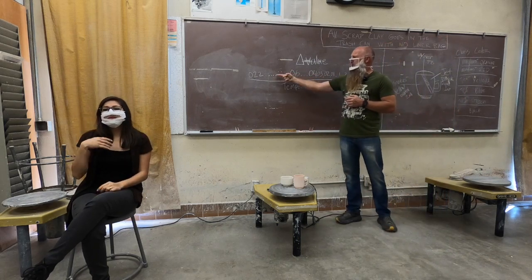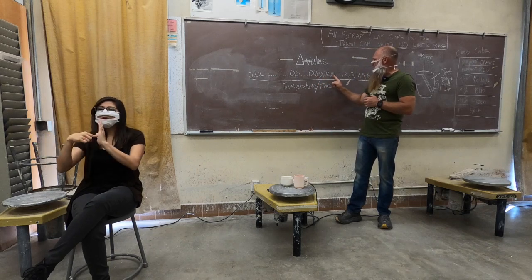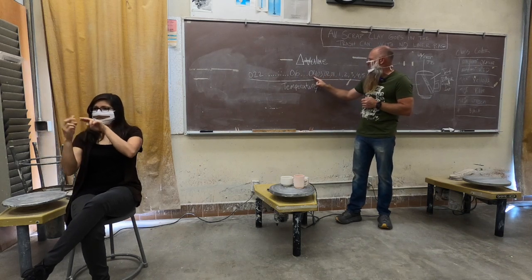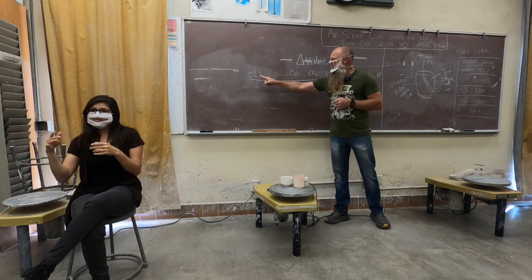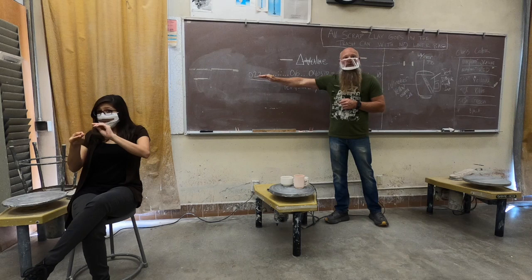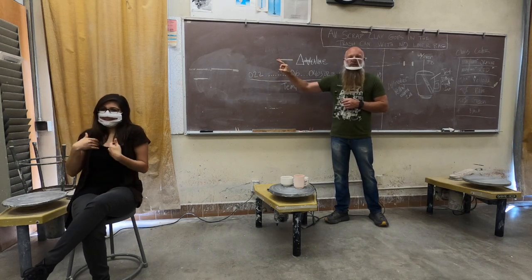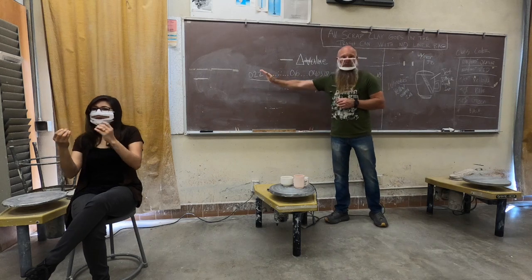As it goes down this direction, lower in temperature, you'll notice that the numbers are going bigger: 1, 2, 3, 4, 06, cone O22, right? The numbers are getting higher as they go down in the scale, but that's because they have that zero in front of them, much like a negative number. So think of these like negative numbers.